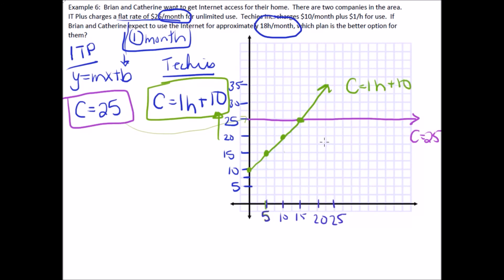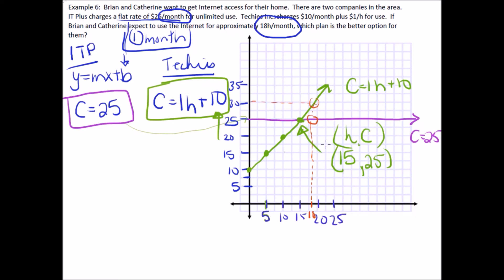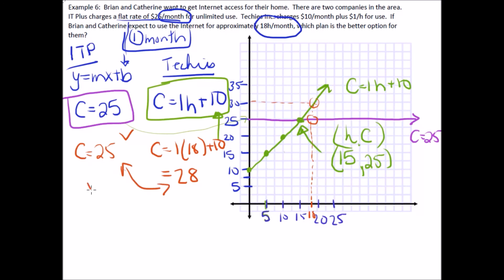At 15 hours the cost is $25 for both plans. The question asks about 18 hours per month. Looking up 18 on the graph, the purple line (IT Plus at $25) is lower than the green line (Techies at approximately $28). So for 18 hours a month it's cheaper to go with IT Plus. We can also verify by plugging 18 into C equals H plus 10 to confirm IT Plus is the better choice.